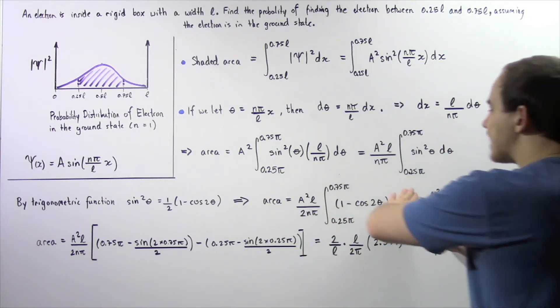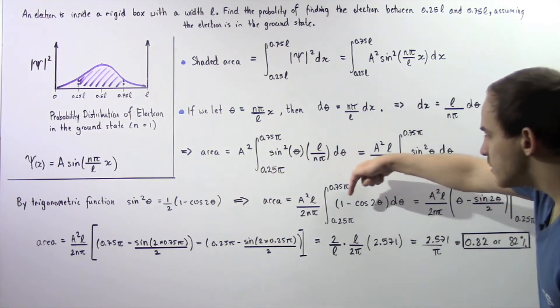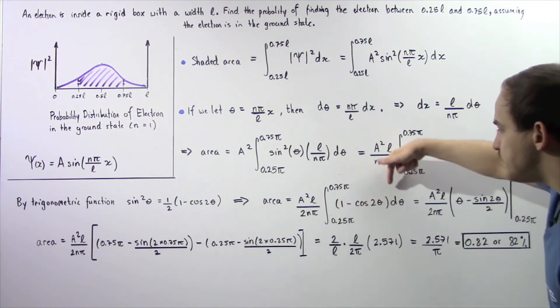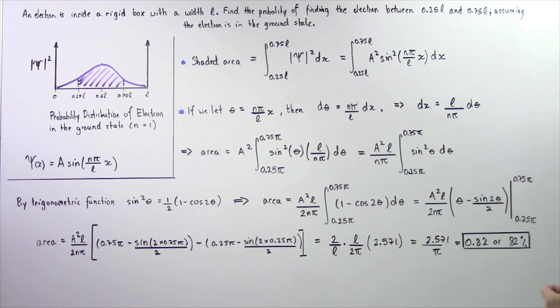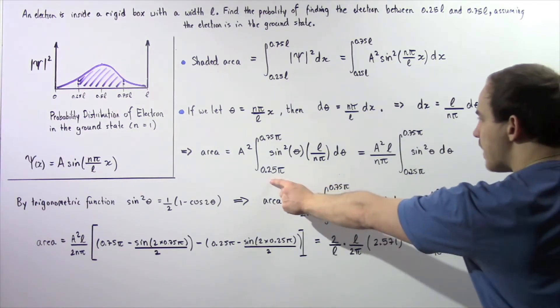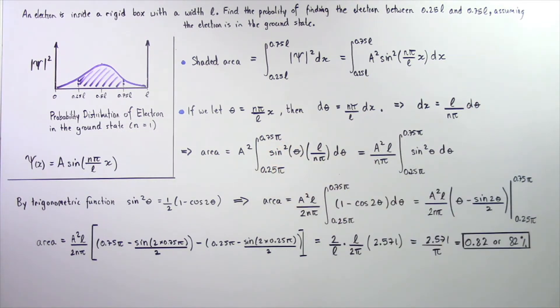The next step is to actually integrate. This becomes θ and this becomes sine of 2θ divided by 2 as shown in the following region. We evaluate the integral from the lower boundary to the upper boundary.